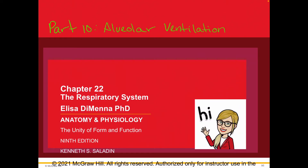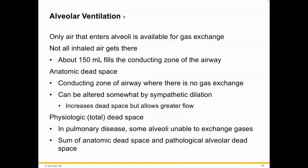Hey everybody, I'm back. I'm Elisa and we are talking about the respiratory system. I want to take a quick look at alveolar ventilation. The alveoli are the little grape-looking structures within the lung that increase the surface area so that we can have gas exchange. It's also where the capillaries are wound around them so that we can have that point of gas exchange for the circulatory system.